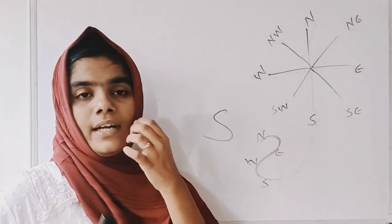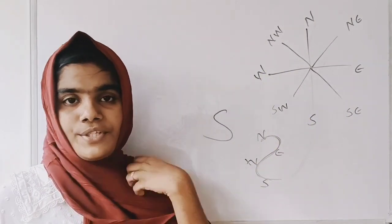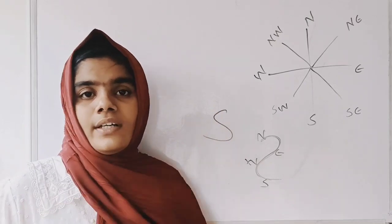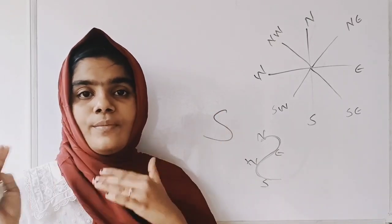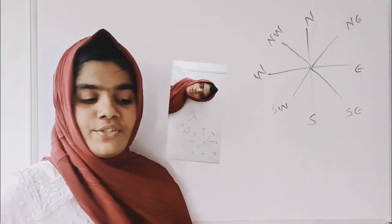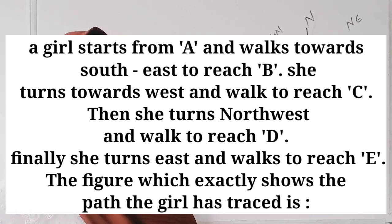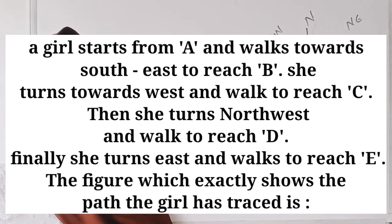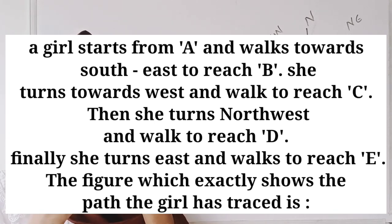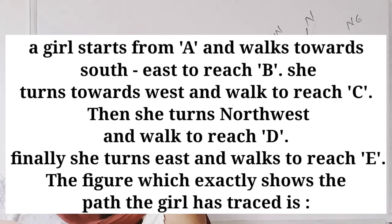A girl starts from A and walks towards South-East to reach B. She turns towards West and walks to reach C. Then she turns North and walks to reach D. Finally, she turns East and walks to reach E. The figure shows exactly the path the girl has traced.